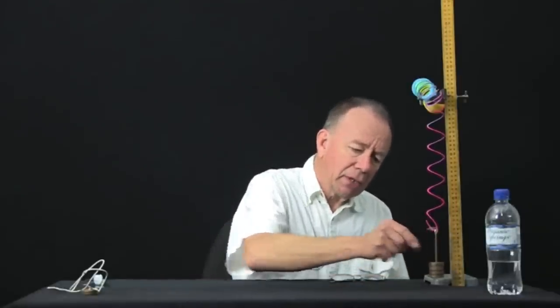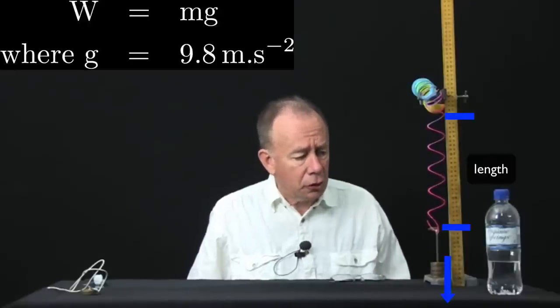At the moment, each one of these masses is 50 grams, as is the device that's carrying them. So we have 200 grams stretching this spring, and that's a weight of about 2 newtons.